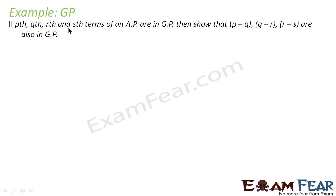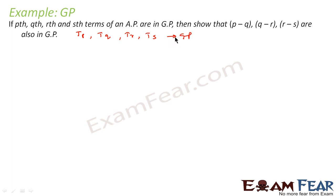Let's take one tricky question. We are told that the pth, qth, rth, and sth terms of an AP are in GP. We have to prove that (p−q), (q−r), and (r−s) are also in GP.